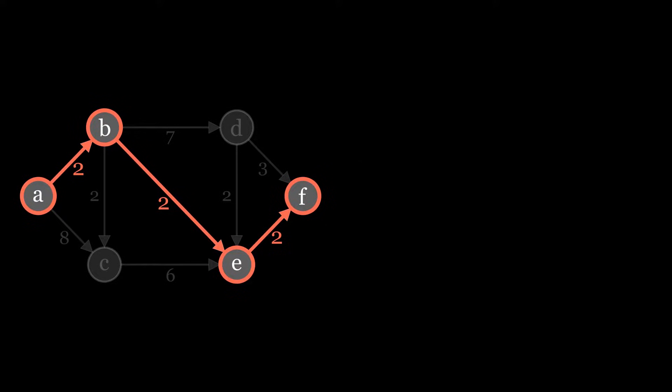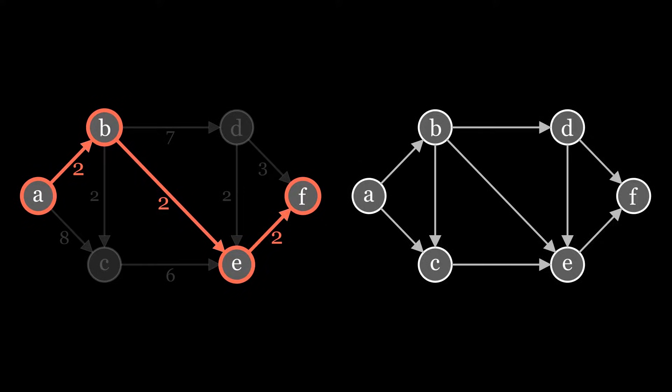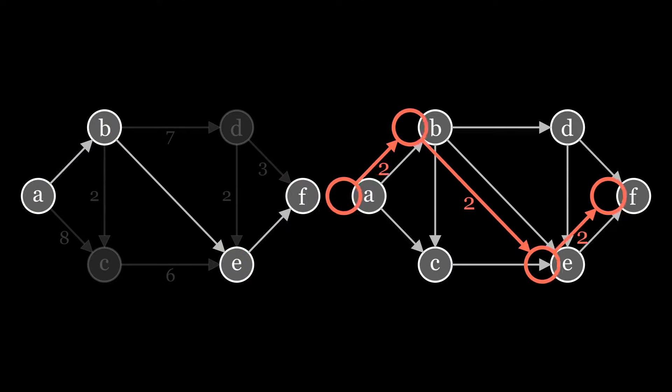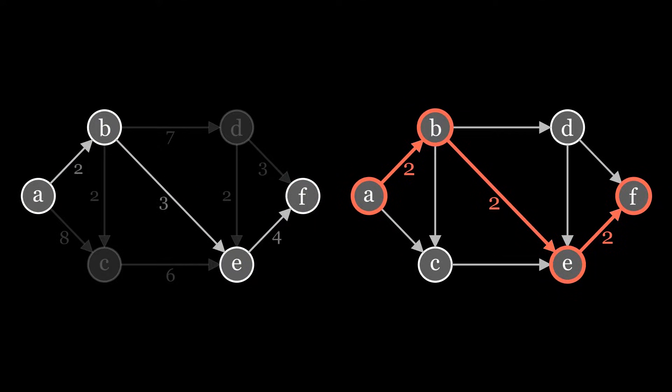We take note of this flow by visualizing it in a separate flow network on the right. Now we update the capacities on the first graph, which we call residual graph, removing the flow that went through the graph in the first step.